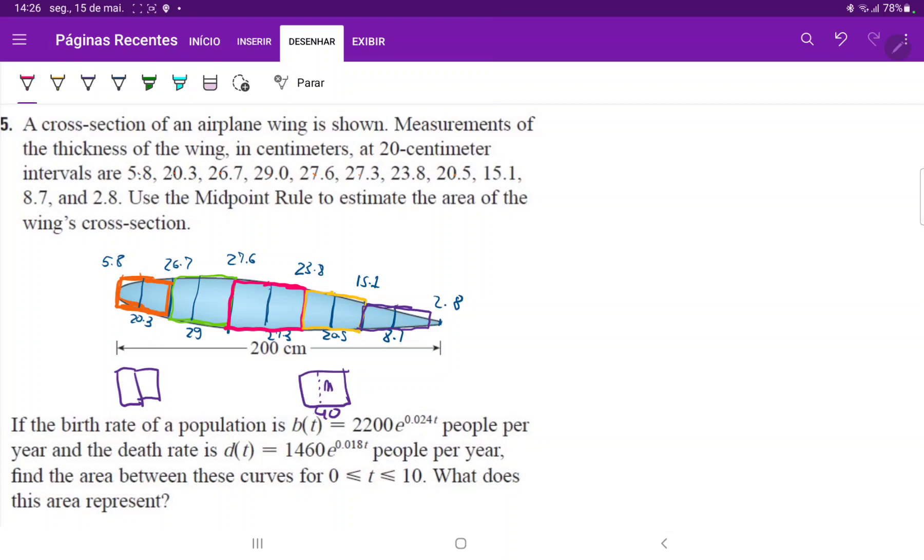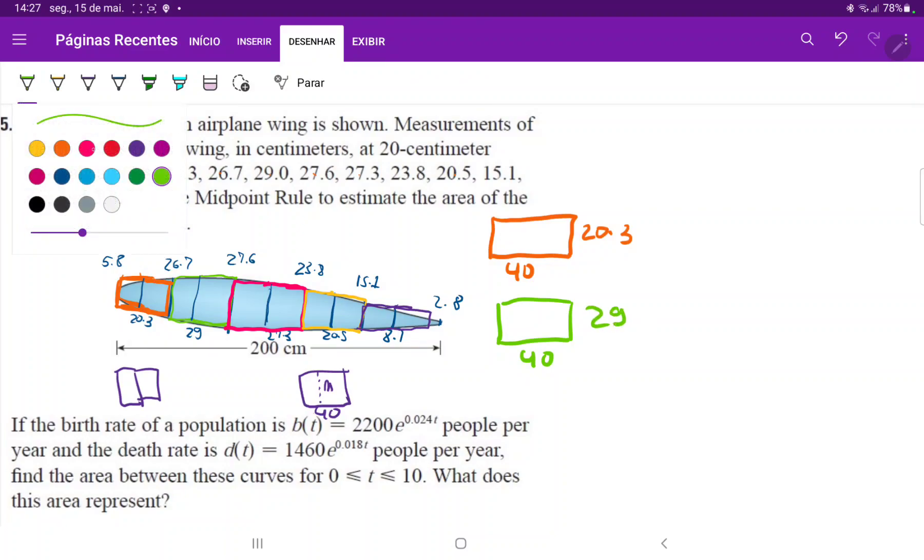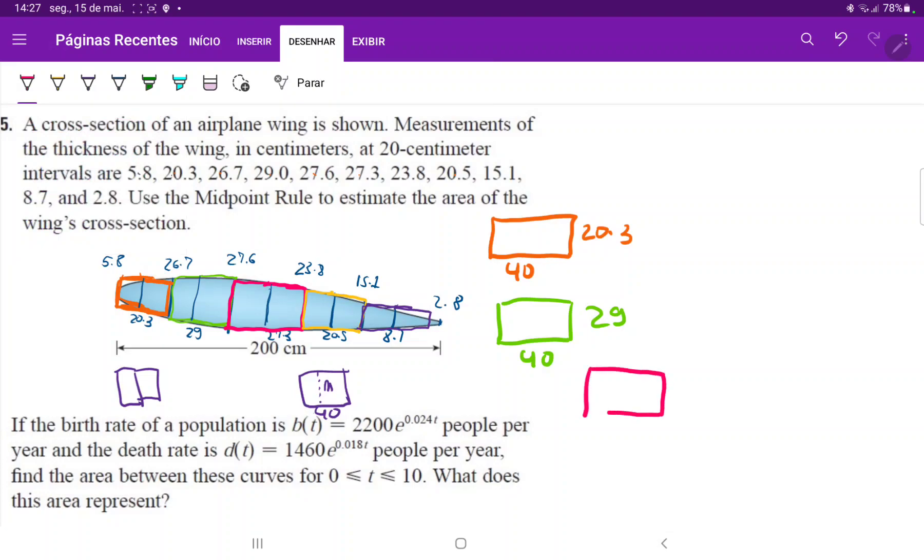So the first rectangle that we had, the base was 40 and the height was 20.3, which was the first midpoint. And then the second rectangle. So the second rectangle was the base was 40 and the height was 29. And then the third rectangle, the base was 40 and the height was, let's see the height, 27.3.